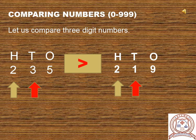What if the digits in the hundreds place are the same? Let us compare 235 and 219. Start by comparing the leftmost digit, which is hundreds place. Both digits at hundreds place are same — that is 2. So we move to the next place value, which is tens. In 235, 3 is at tens place, and in 219, 1 is at tens place. Clearly, 3 tens is greater than 1 ten. That means 235 is greater than 219.